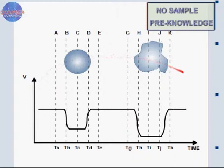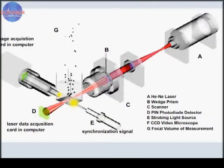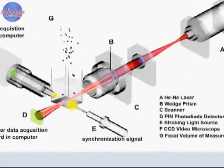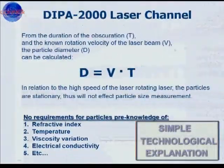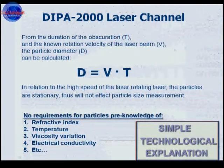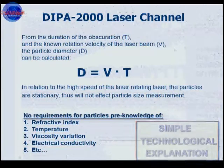Since the rotation velocity of the laser beam is known, the obstruction time is used to determine the particle's diameter by a simple formula: particle diameter equals velocity multiplied by the obstruction time.